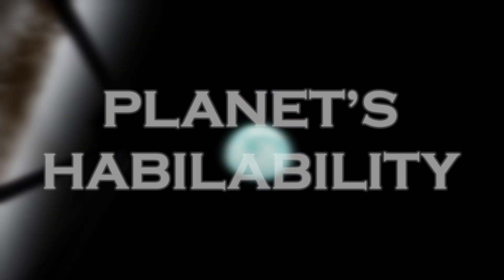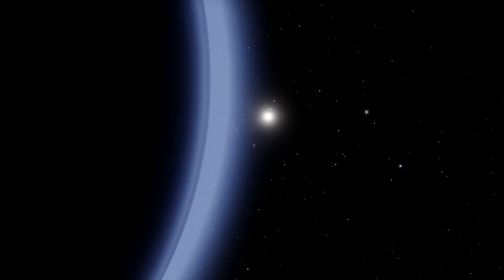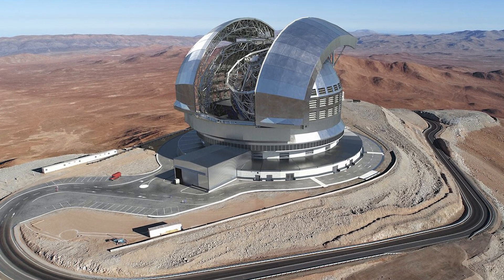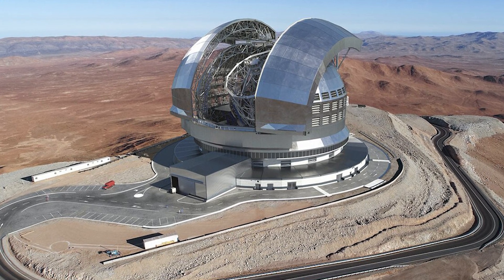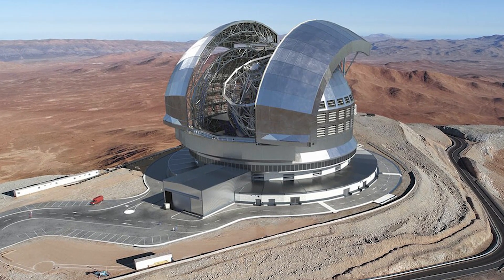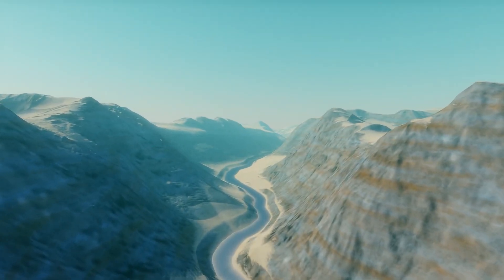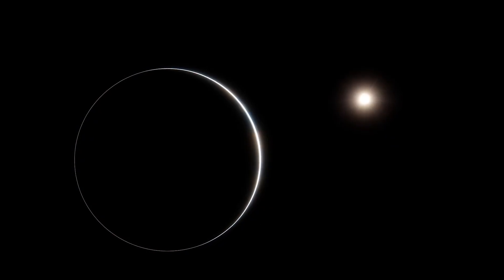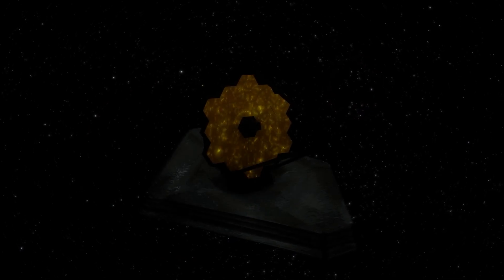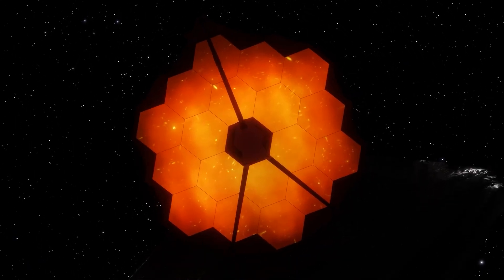It is important to keep in mind that the JWST cannot explore all potential habitable worlds, as it has limited capabilities and can only observe some of the exoplanets closest to Earth. Therefore, astronomers are turning to ground-based observatories such as the Extremely Large Telescope, the ELT, which is expected to become operational in 2028 and allow for a deeper investigation of the atmospheric structure of distant exoplanets. Scientists eagerly anticipate the development of future space telescopes that will expand our understanding of exoplanetary exploration. Although the JWST has limitations, it remains a crucial tool for unraveling the mysteries of distant exoplanets.